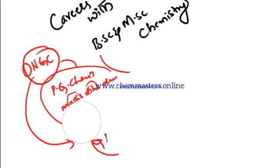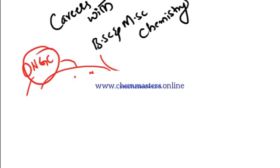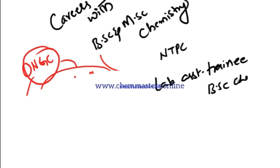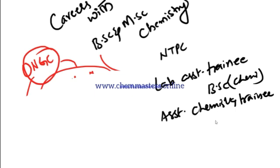Now just look at another popular chemist recruitment from NTPC. To become lab assistant trainee in NTPC, one should have BSc chemistry as a basic qualification. And to become assistant chemistry trainee in NTPC, one should have MSc chemistry as a basic qualification.